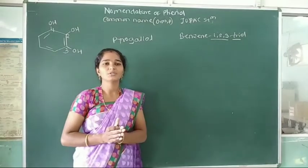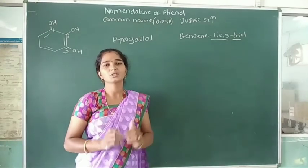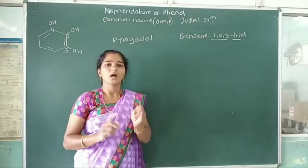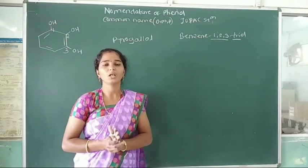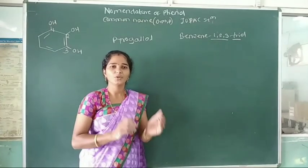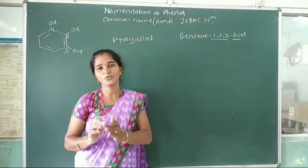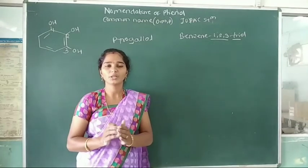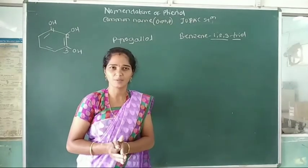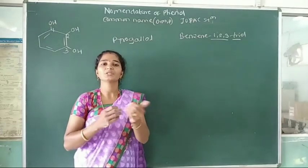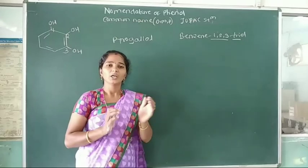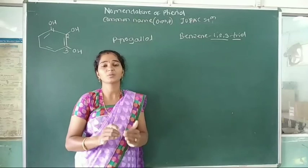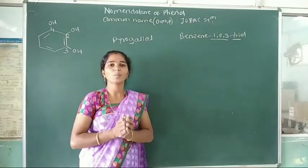In this lecture, we studied the common system and IUPAC system of phenol nomenclature. In the common system, prefixes ortho, meta, and para are used for substituted phenols. In the IUPAC system, locants 2, 3, and 4 are used for substituted phenols. The common name 'phenol' is also accepted by the IUPAC system. In the IUPAC system, phenol is called phenol or benzenol.